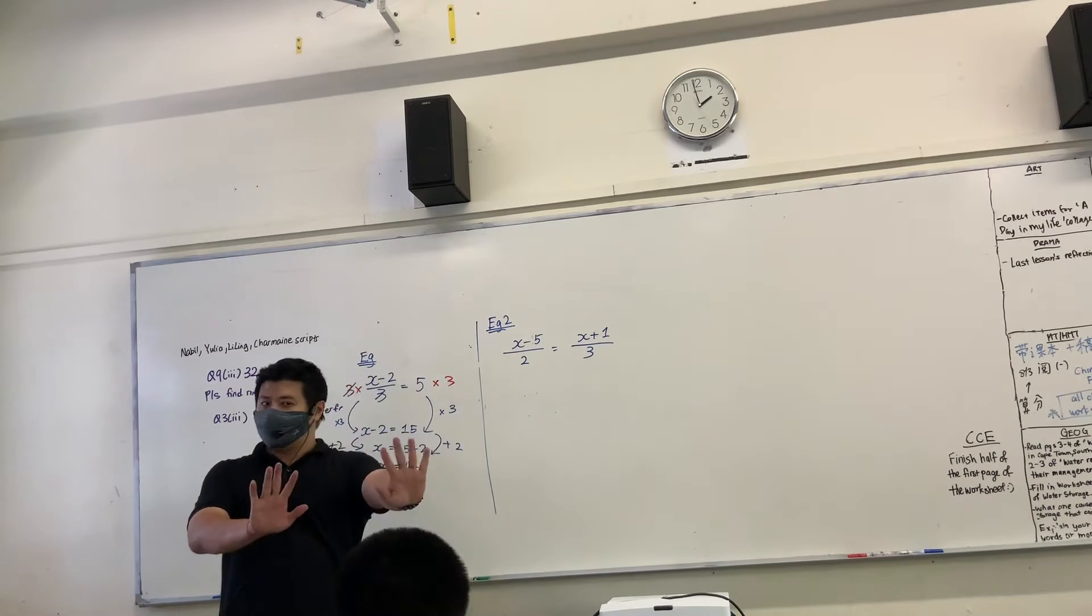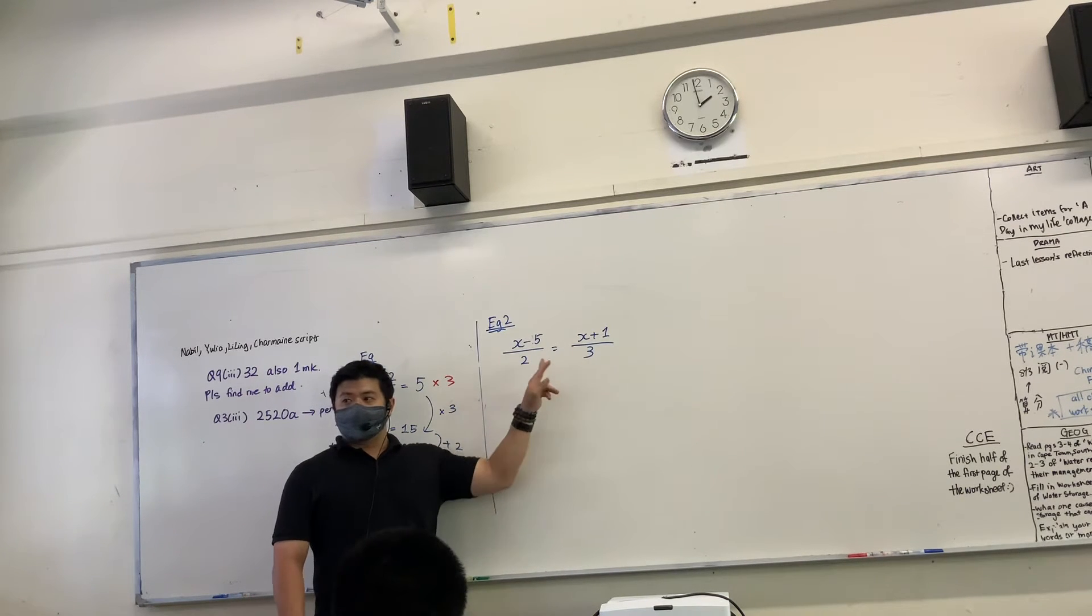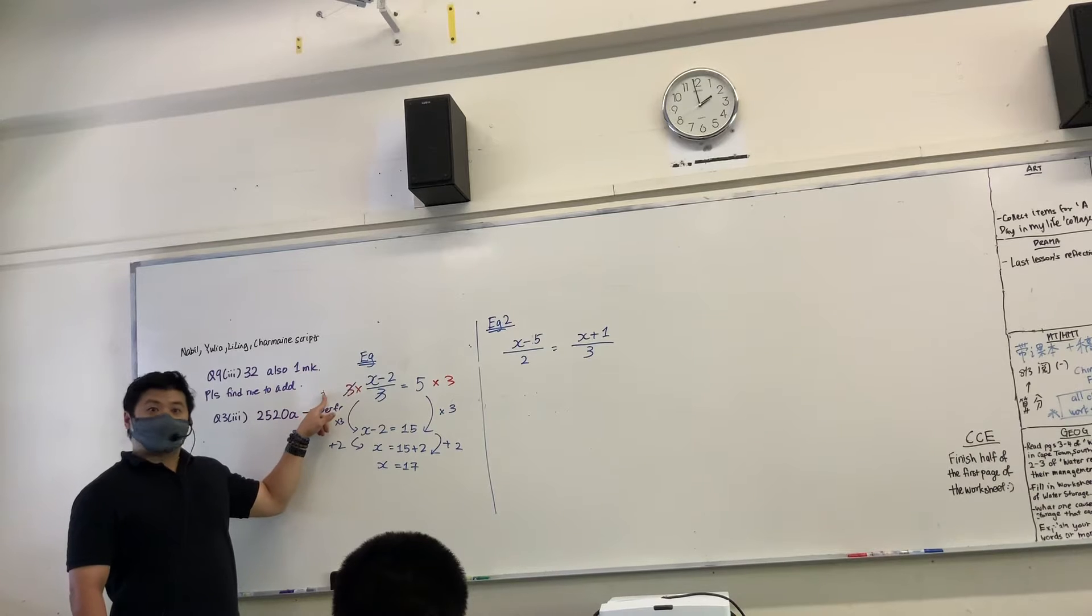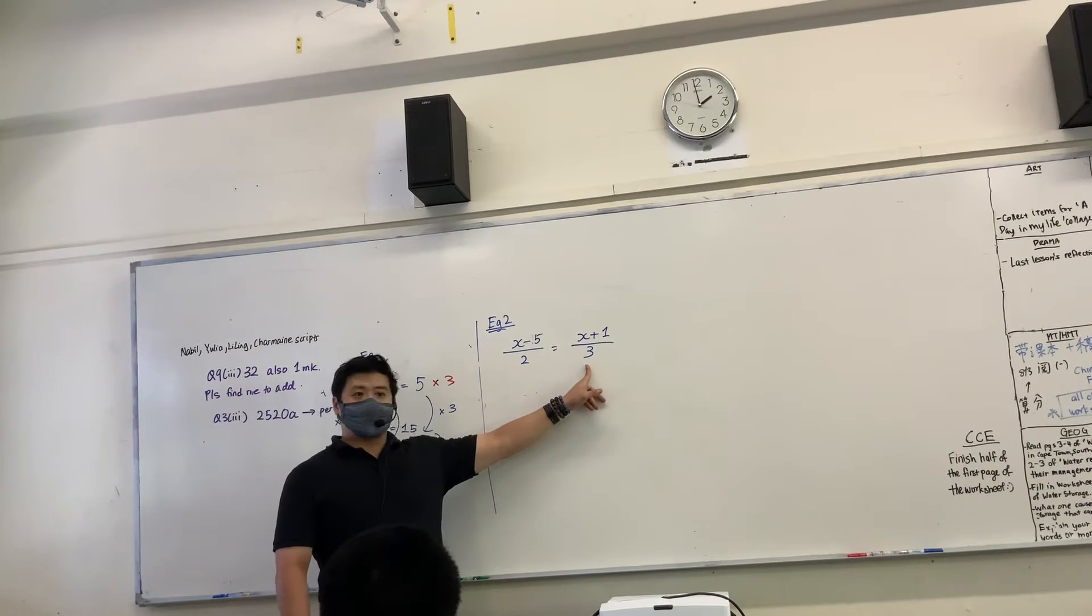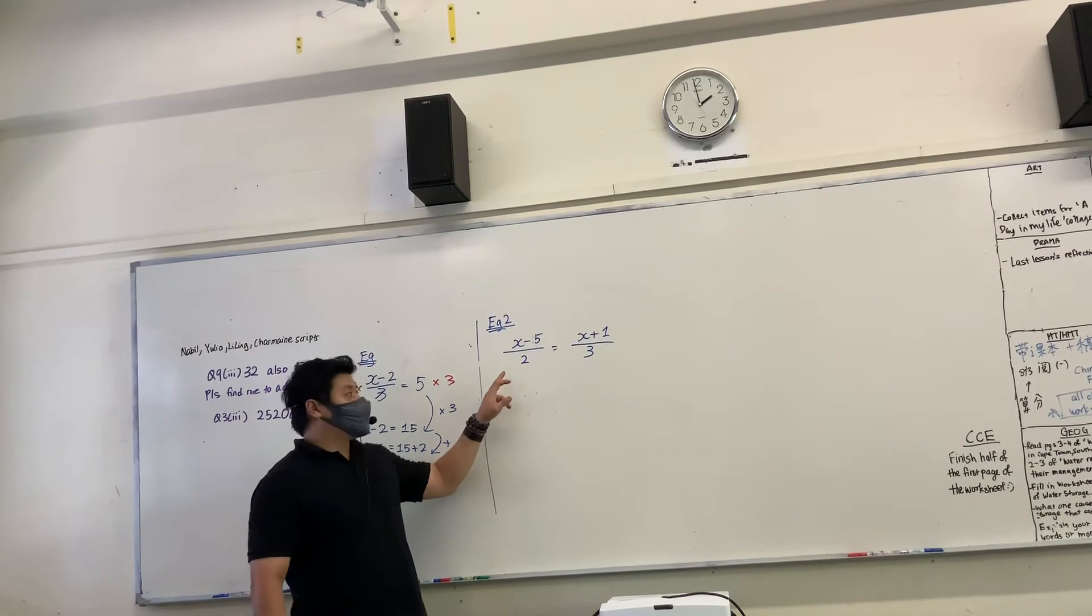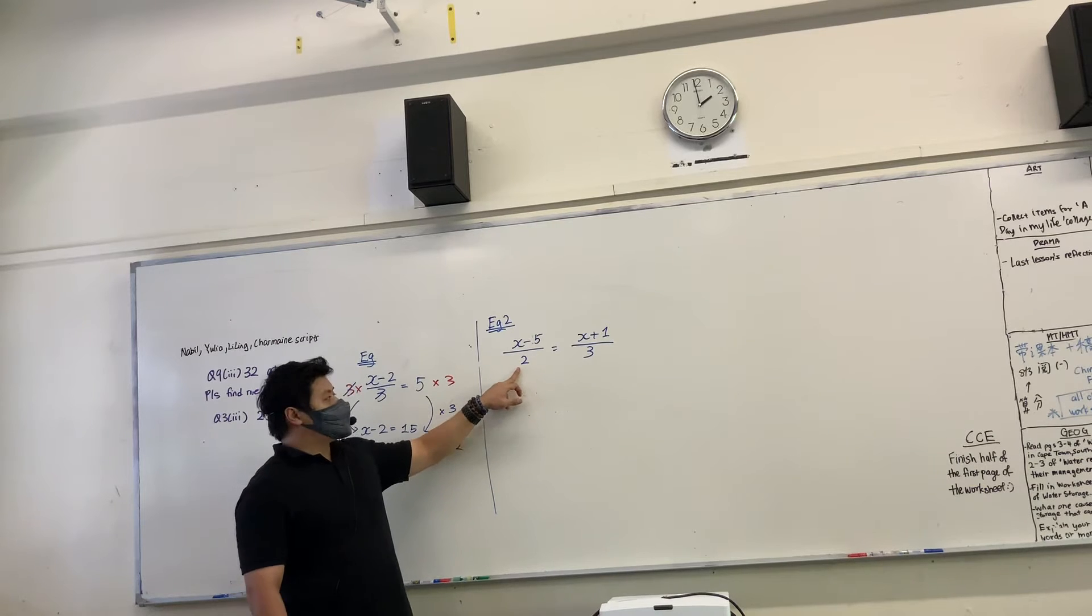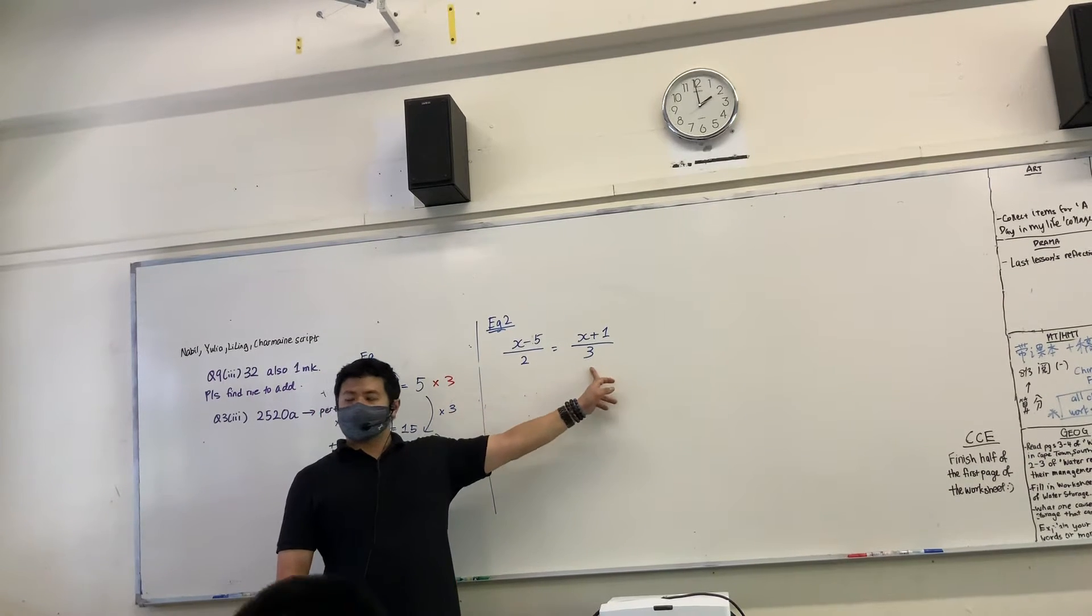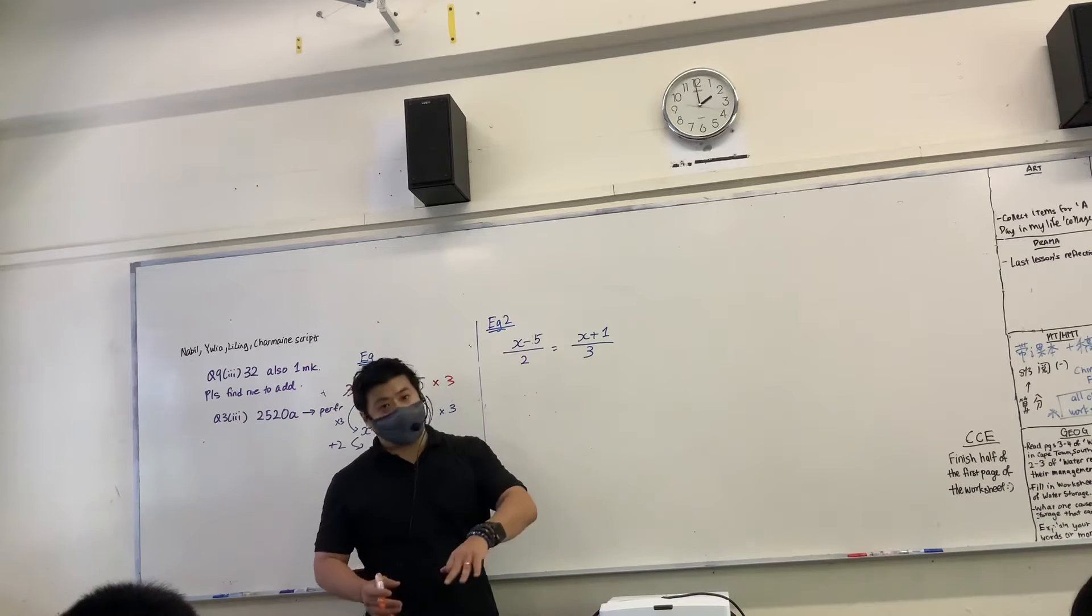You have to multiply. The idea is you can see I need to get rid of the 2 and the 3. If there is a divide by 3, I cancel the 3 by multiply by 3. Here there is a divide by 2, so I will cancel the 2 by multiply by 2. If I need to multiply by 2 and multiply by 3, what do you think I need to multiply by?